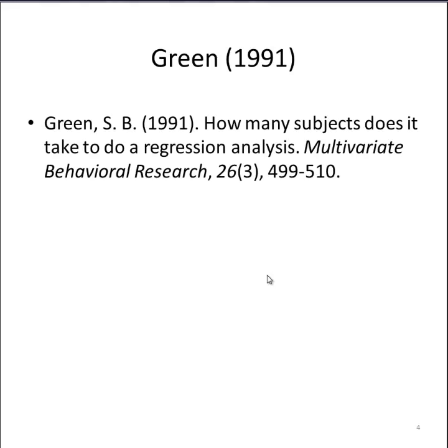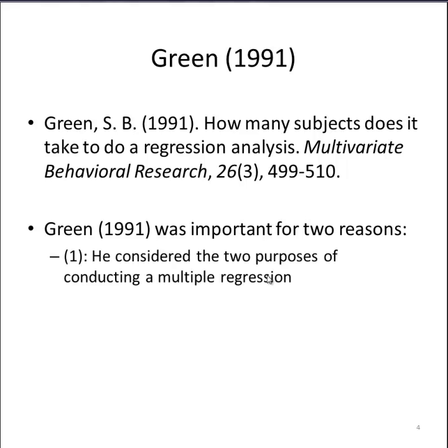Green, in 1991, published a paper that advanced the field, and it's become a citation classic. He addressed the question of how many subjects does it take to do a regression analysis. And his paper was insightful for a couple of reasons. First, he considered the two purposes of conducting a multiple regression, the multiple R question and the beta weights question. And he also considered statistical power. The question of how many cases you need to conduct a multiple regression analysis is essentially a question of statistical power: the probability of rejecting the null hypothesis when it is in fact false.